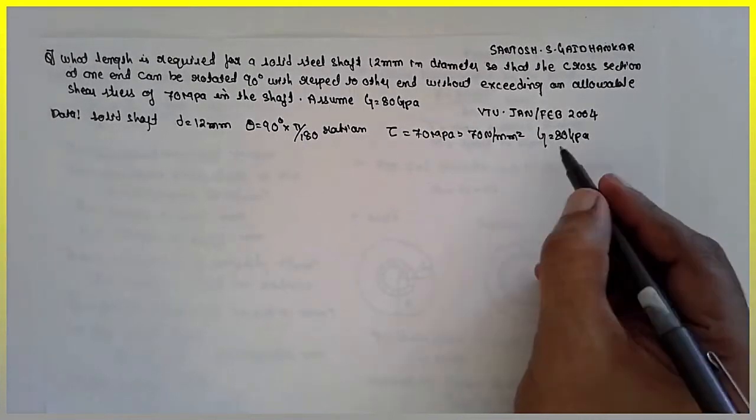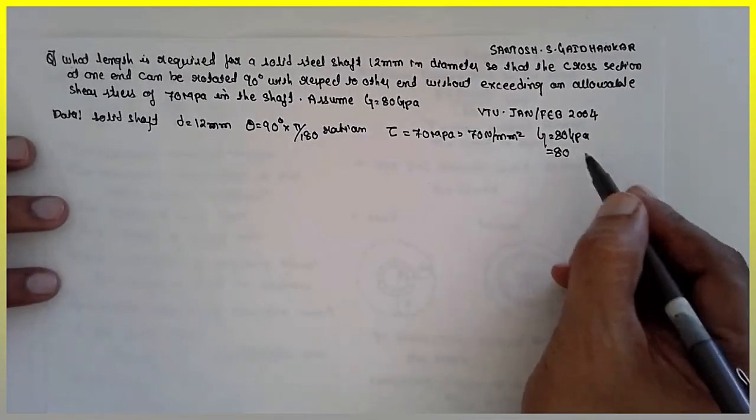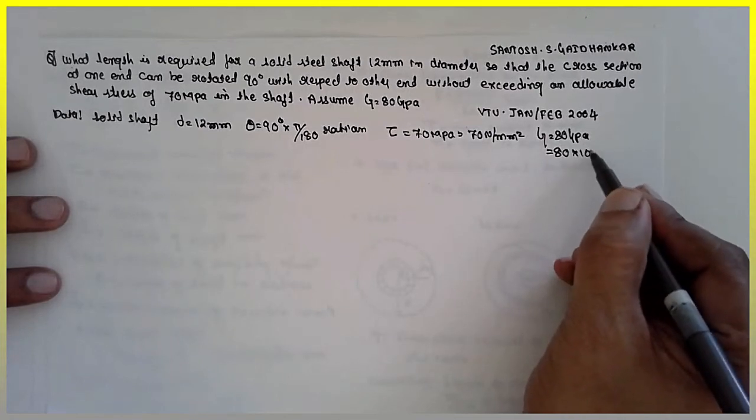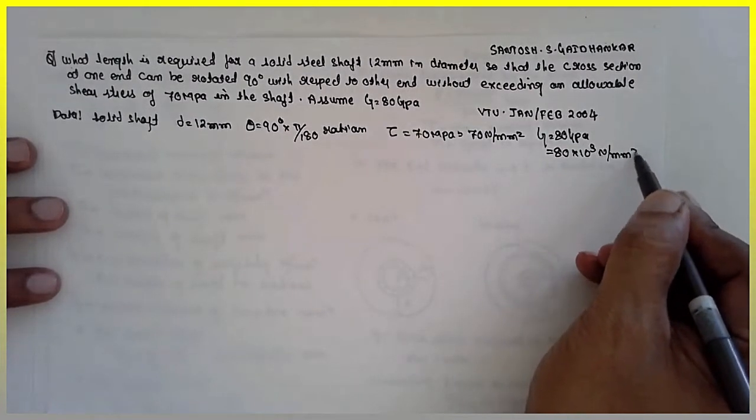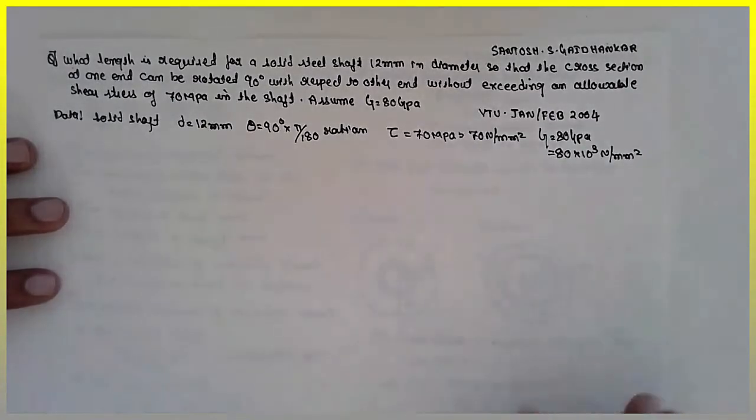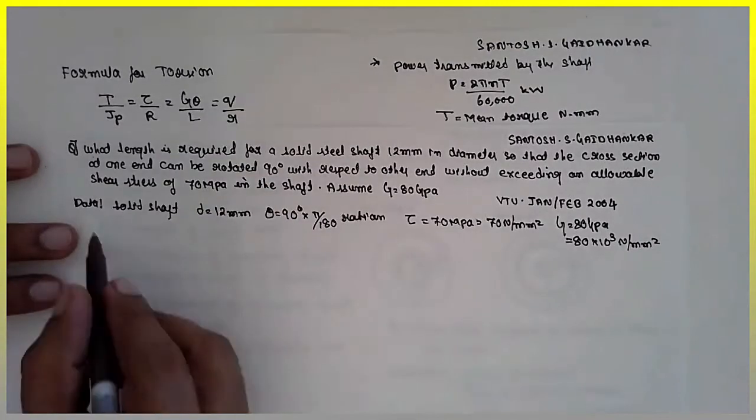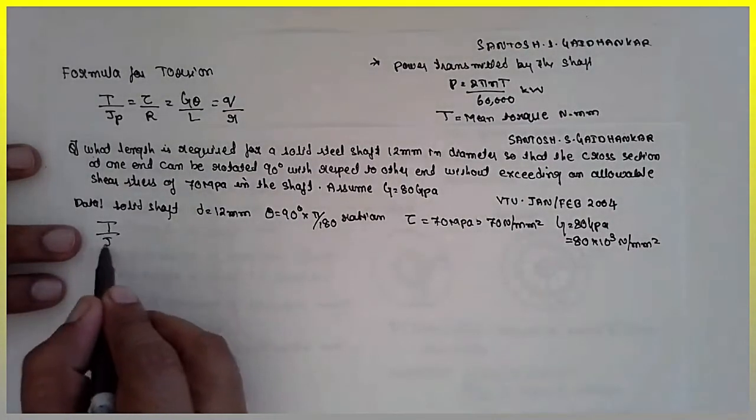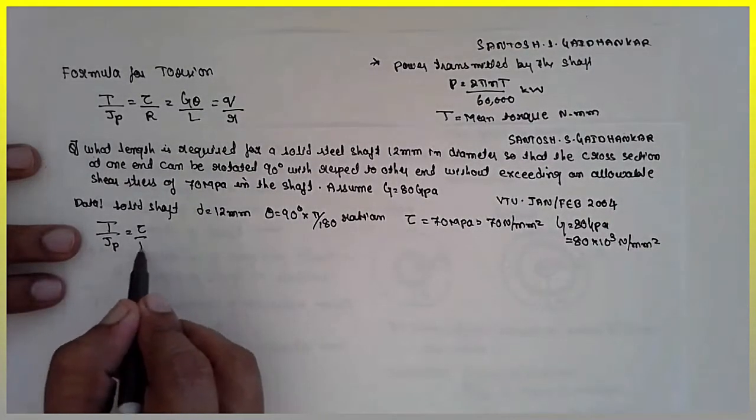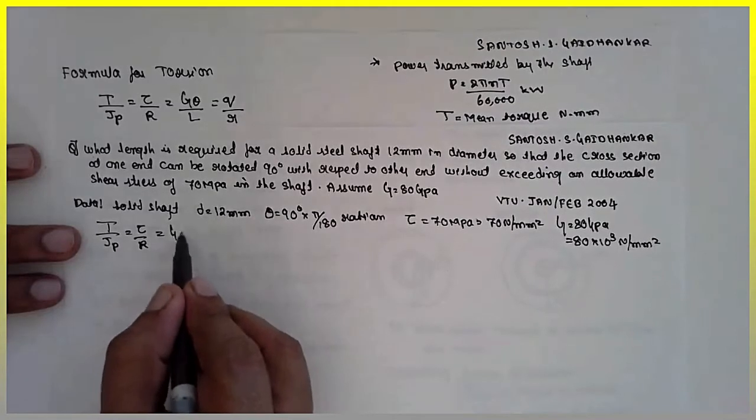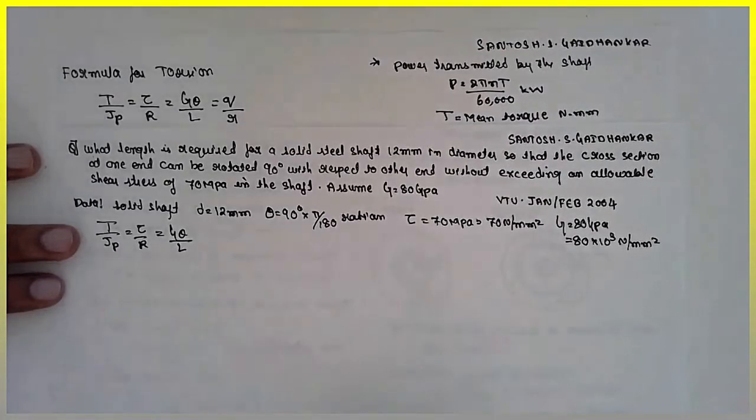Assume G is equal to 80 GPa, that is modulus of rigidity, has to be expressed in terms of Newton, 80 into 10 raised to 3 Newton per mm square. Now use the formula.